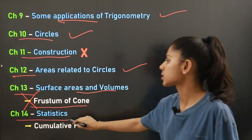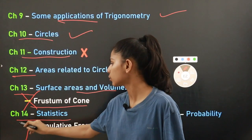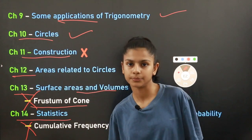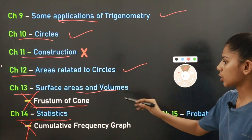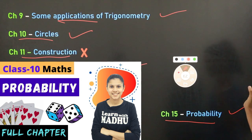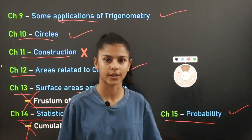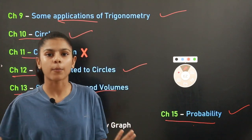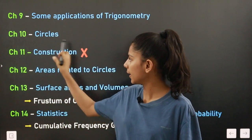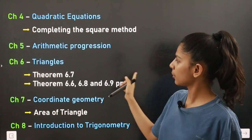Chapter number fourteen is Statistics. The last topic, the cumulative frequency graph, has been removed, so there will be no questions based on it. Chapter number fifteen is Probability, which is a very easy chapter, and it is the complete chapter — nothing has been reduced. So only chapter eleven Construction has been fully removed, with some topics reduced in other chapters.